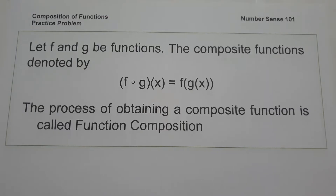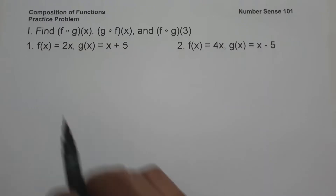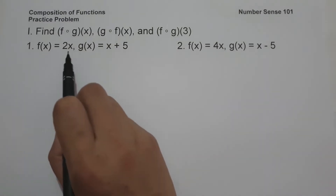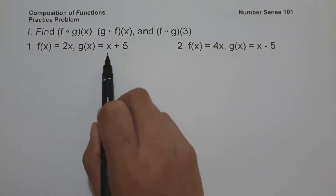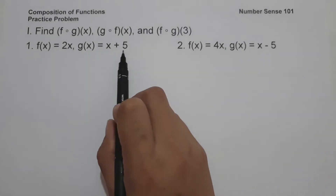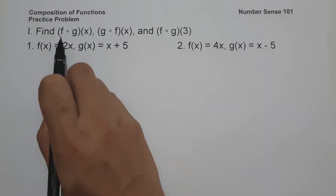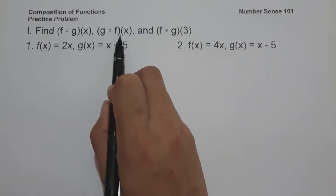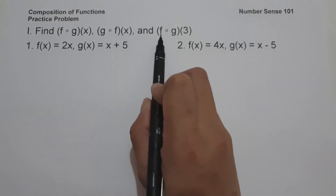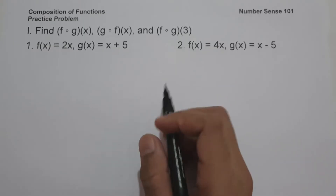So let's start and let's have an example. The first example: f of x equals 2x, g of x equals x plus 5, and we are going to find f circle of g of x, g circle of f of x, and f circle of g of 3.